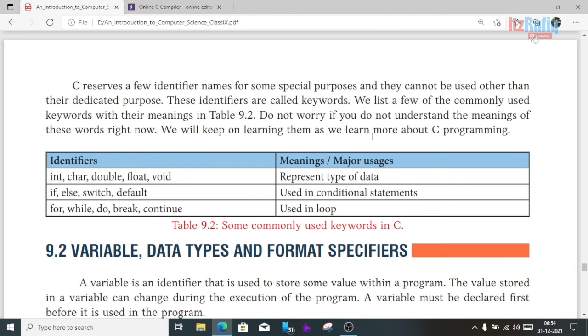Then if, else, switch, default - these are used for conditions in programming. You may have learned these in classes 7 or 8. We cannot use these words as identifier names because they are already reserved in the C compiler. Similarly for, while, do, break, continue - these are used in loops.